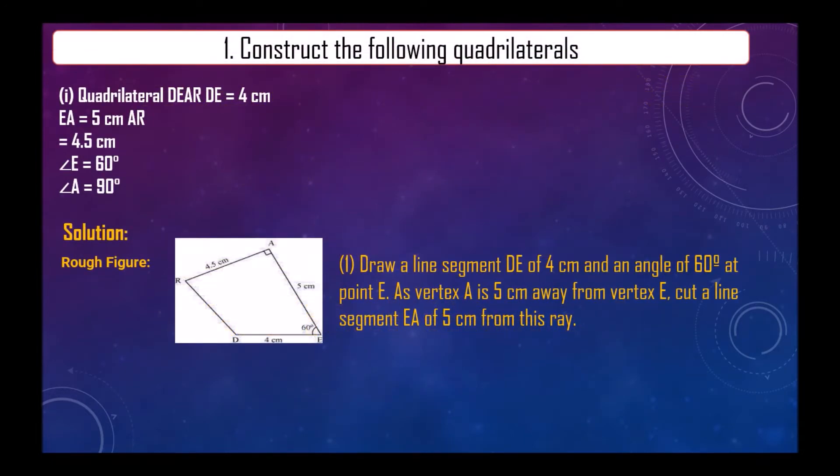The first question is: construct the following quadrilaterals. So we have to construct quadrilateral DEAR in that DE is given 4 centimeter, EA is given 5 centimeter, AR 4.5 centimeter, angle E is given 60 degree, and angle A is given 90 degree.